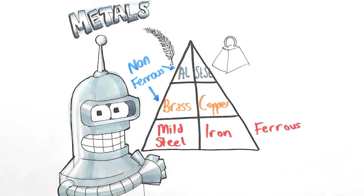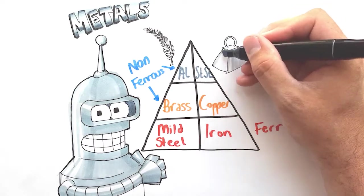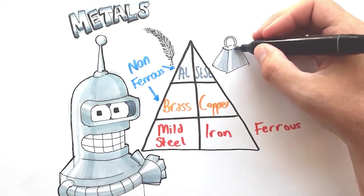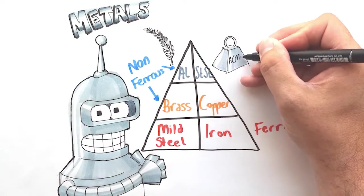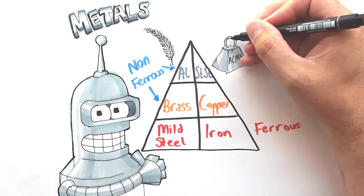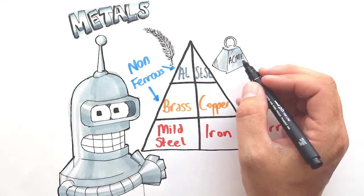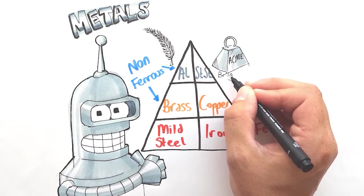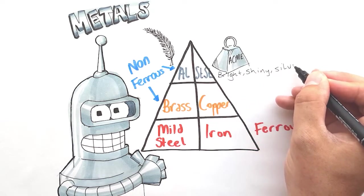They have a shiny metal silvery appearance both aluminium and stainless steel and they're chosen for their aesthetics properties. They're considered to be really nice metals to look at. So we class that as being bright, shiny and silver. These two are the properties of aluminium and stainless steel.